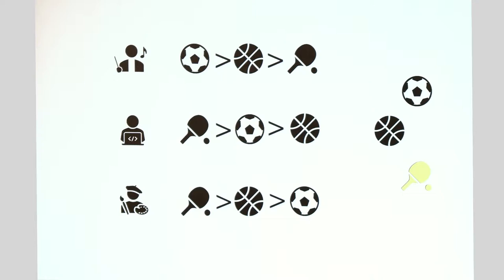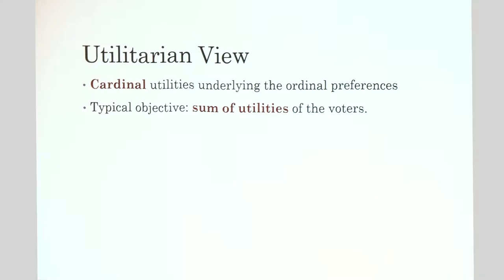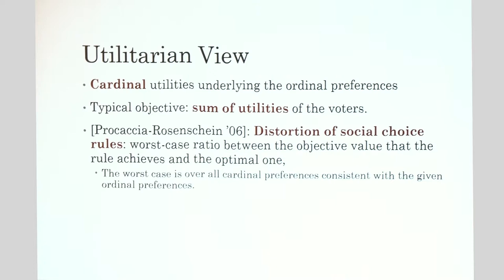There's a utilitarian view of social choice rules. We assume there are cardinal utilities underlying the ordinal preferences — so there are numbers. A typical objective is to maximize the sum of utilities of the voters. In 2016, Procaccia and Rosenschein defined the notion of distortion of social choice rules: it's the worst-case ratio between the objective value the rule achieves and the optimal one, where the worst case is over all cardinal preferences consistent with the given ordinal preferences.